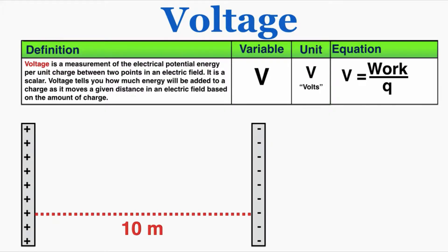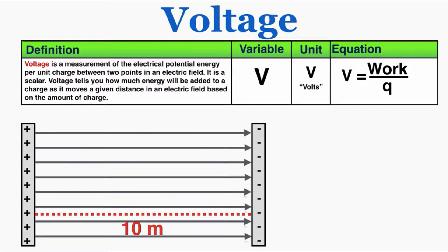I'm going to imagine two parallel plates separated by 10 meters. From the video on electric fields, if you have two parallel plates of opposite and equal magnitudes of charge, the electric field between them will be constant and will go from the positive to the negative plate. Here the electric field is 10 newtons per coulomb, and the plates are separated by a distance of 10 meters.